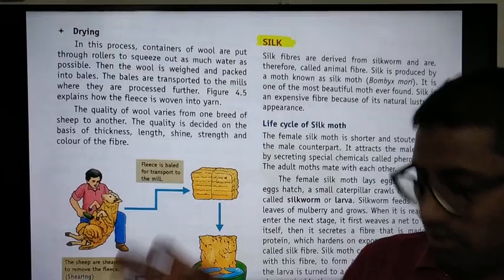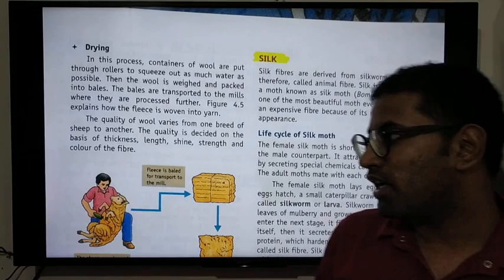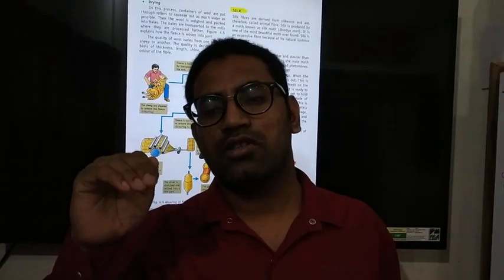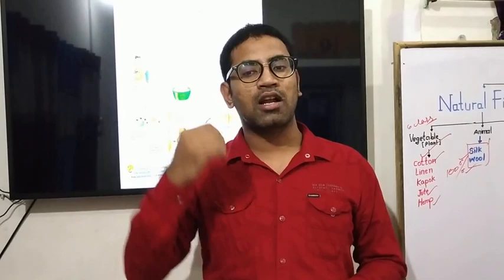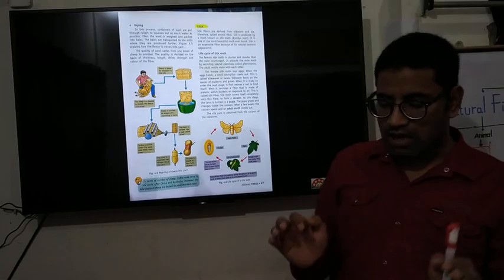The steps so far are: shearing, scouring, grading, dyeing, and drying. After this comes carding. In carding, the wool is passed through a metal piece to clean and straighten the fibers. This process of combing and cleaning the wool is called carding.